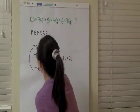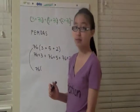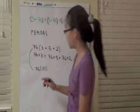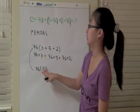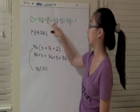So 76, and when you add 3 plus 5 plus 2, you get 10. And that way you only have to multiply two numbers rather than having to multiply three times.